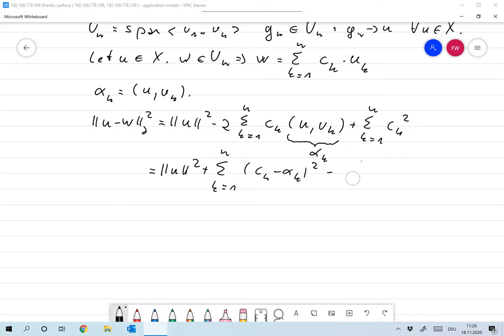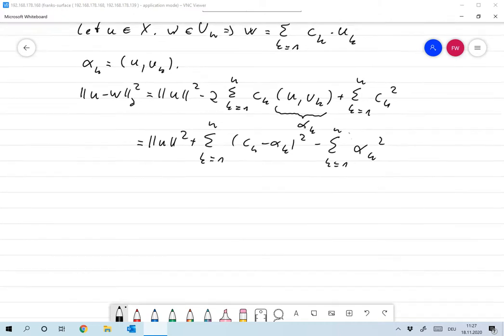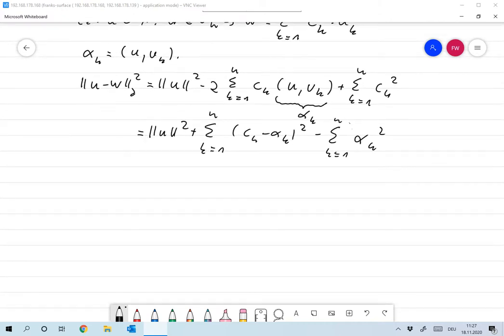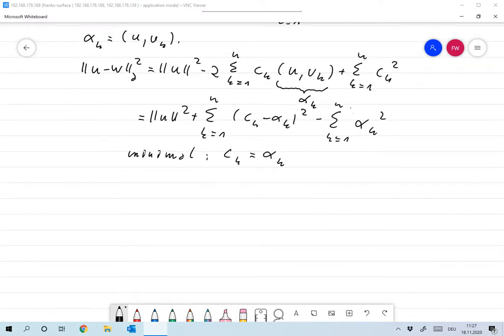So CK minus alpha K squared. And now I have a plus alpha K squared which does not appear, so I need to subtract it. Of course this is minimal for CK equal to alpha K.